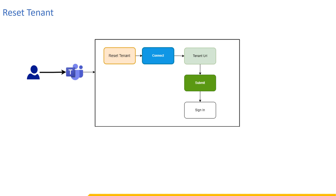Let's see how to reset the tenant. Firstly, the user can select the Reset Tenant button in the Teams application. If we click the Reset Tenant button, all tenants will get disconnected from the setup. After that, the user again has to connect to a new tenant — get the tenant URL, paste it in the tenant mapping, and click the Submit button. After resetting the tenant, the user has to sign in to the tenant again.